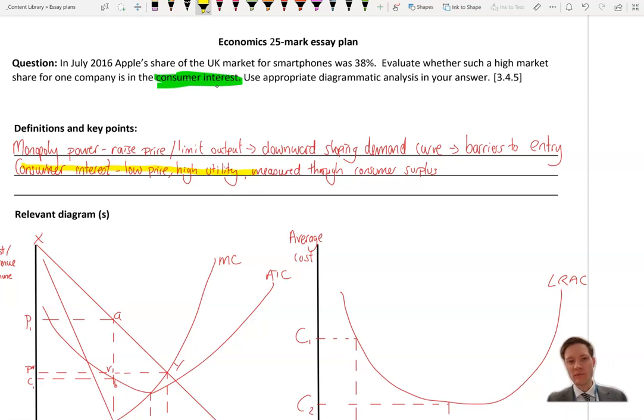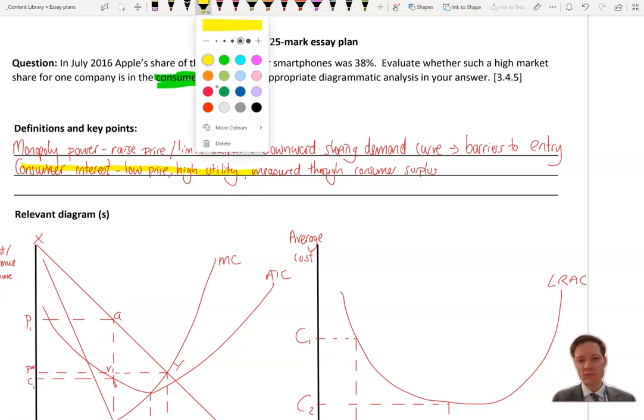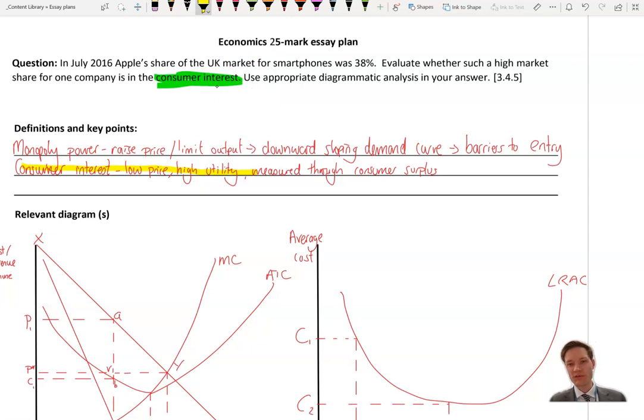high utility, and we're going to measure that through consumer surplus. Throughout the essay, we can be referring back to consumer surplus, and we want to define that at the beginning. Moreover, we'd want to perhaps link market share to market power, because really, this question is a question about market power and contestability. Is it in the consumer interest for a company to have high levels of market power? That enables them to raise price and limit output, and that implies something to do with barriers to entry, and again, what we said before about contestability.